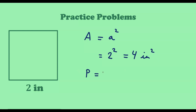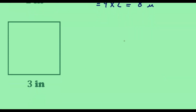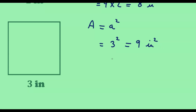The perimeter is given by 4A. In this case, A equals 2, so we have 4 times 2, which equals 8 inches. So the perimeter of the square is 8 inches. Now let us look at the next square, where the length of the side is 3 inches. The area is A squared, and with A equal to 3, we have 3 squared, which equals 9. So the area is 9 square inches. The perimeter is 4 times A, so we have 4 times 3, which equals 12. The perimeter is 12 inches.